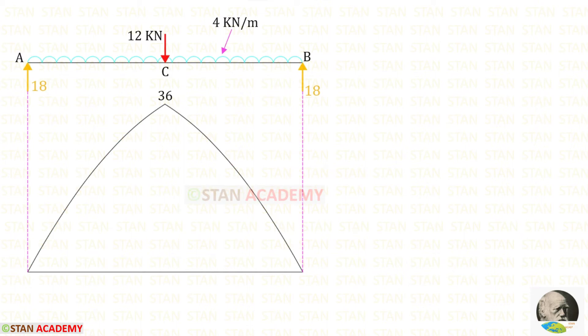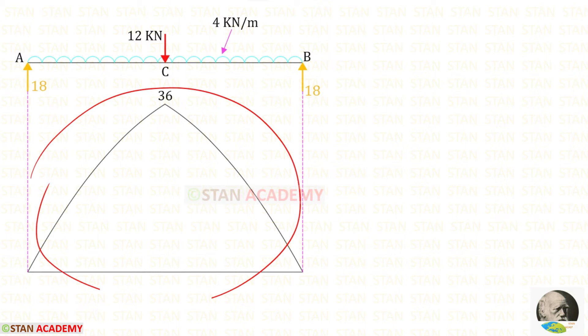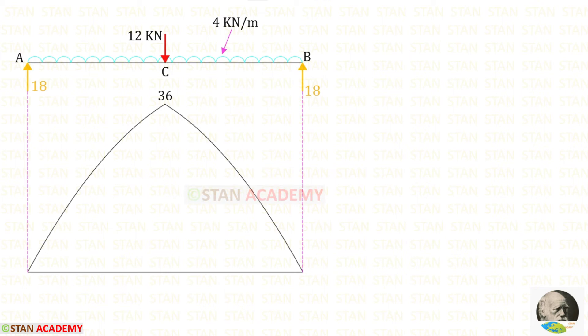Now we need to find the area of this bending moment diagram. Since we have both a point load and a UDL, it is difficult to use a direct formula, so we will use integration. We make sections in the beam — there are two parts, AC and CB — so we make one section in each.